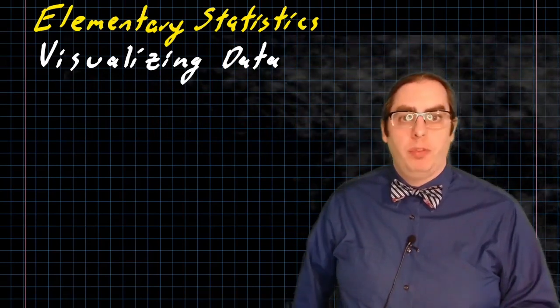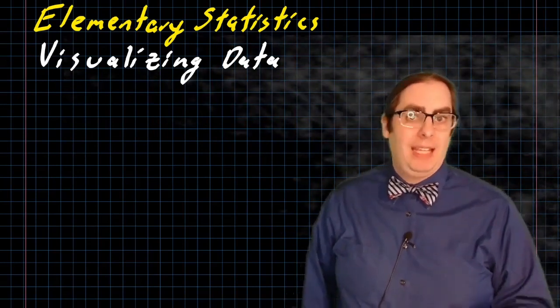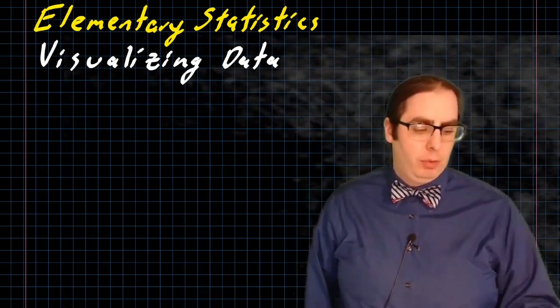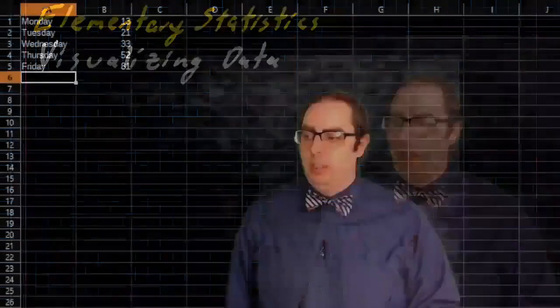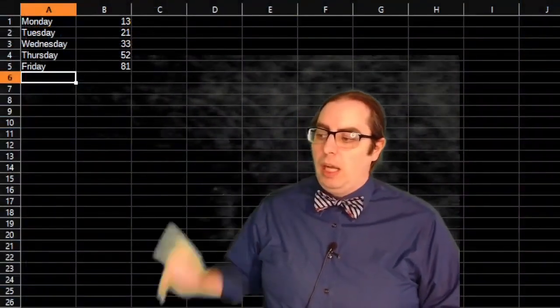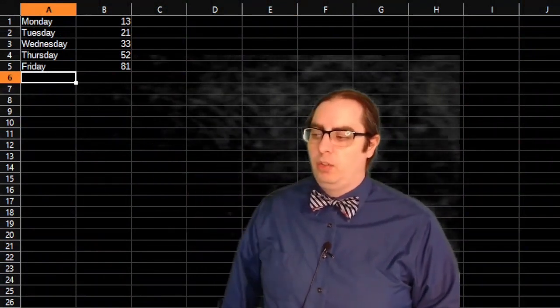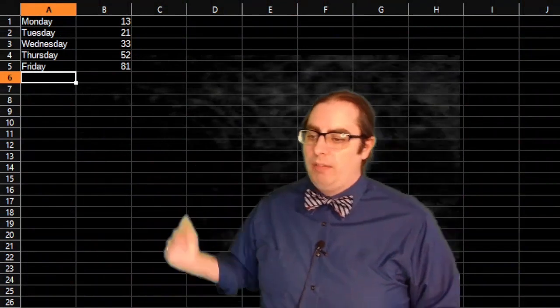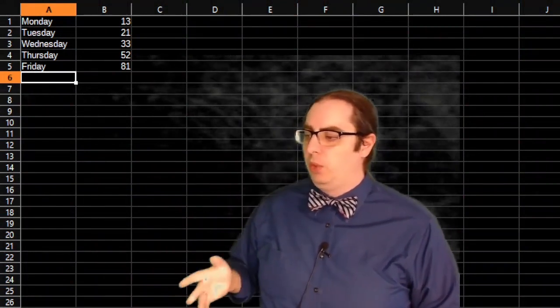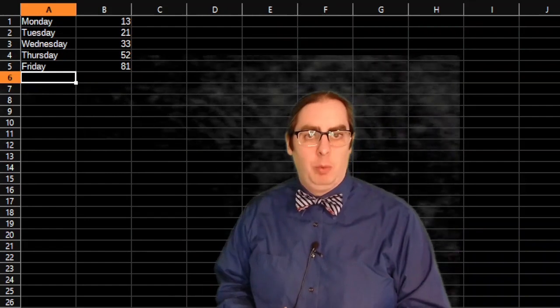And we're specifically going to be looking at a categorical frequency distribution for most of this discussion. So here I have a set of data. We have five days, Monday, Tuesday, Wednesday, Thursday, Friday. We have data points going along with each of them, 13, 21, 33, 52, and 81.